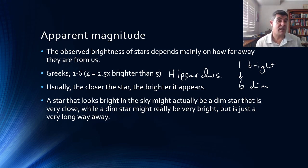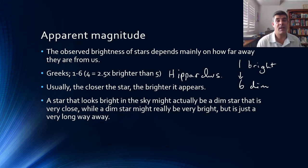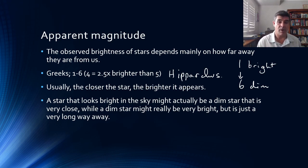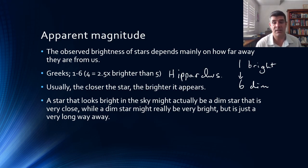The problem with the apparent magnitude scale, of course, is that stars that look bright might not be as bright as other stars — they might just be a little bit closer to us.